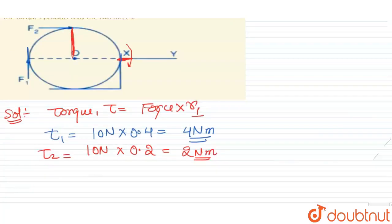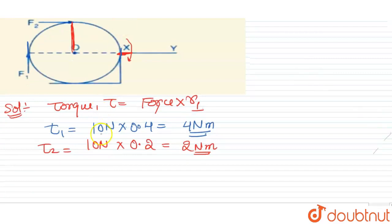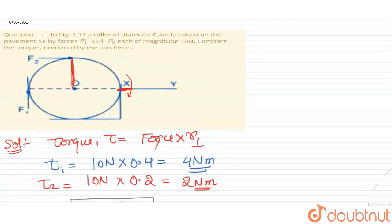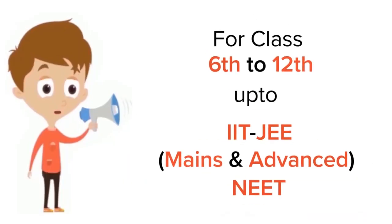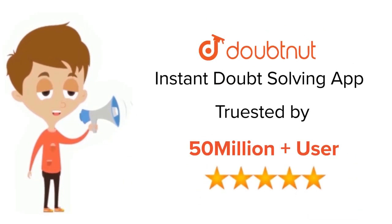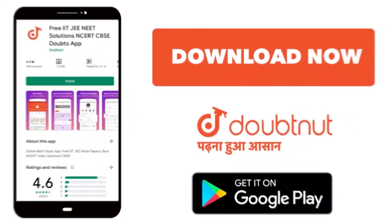So from here, we can say that the torque produced by force F1 is equal to twice the torque produced by force F2. Thank you, I hope it's clear to you. For class 6 to 12th, IIT-JEE and NEET level, trusted by more than 5 crore students, download Doubtnet app today.